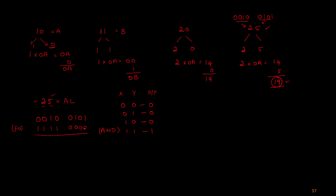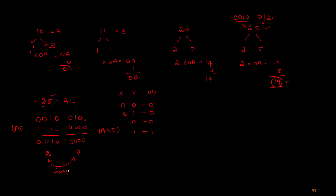Similarly, AND-ing with 0F (0000 1111) isolates the lower nibble. For 25 (0010 0101) AND 0F gives 0000 0101, which is 05. So by using AND with F0 and AND with 0F, we can separate 25 into its two individual digits: 20 and 05.